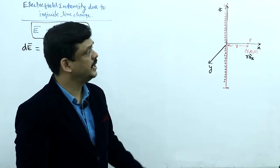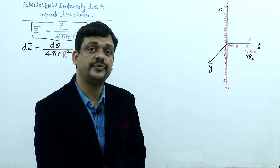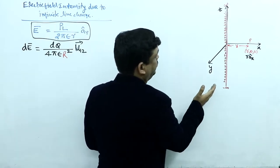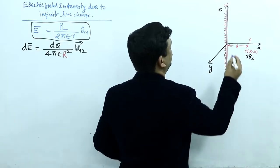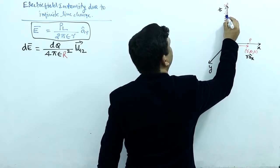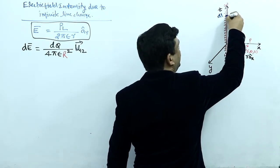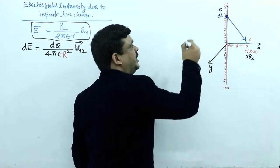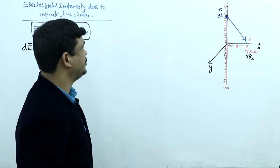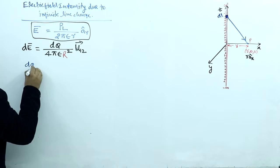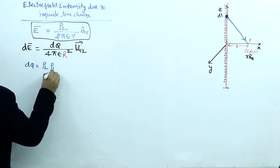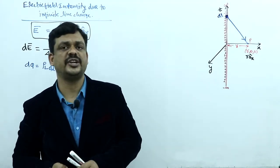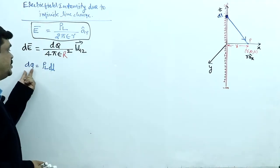We have to find the force acting on this point due to the entire infinite line charge. Finding force from the complete infinite line directly is not possible, so we assume a differential length dl. The differential charge is dq = ρL · dl, since line charge density is total charge per length.